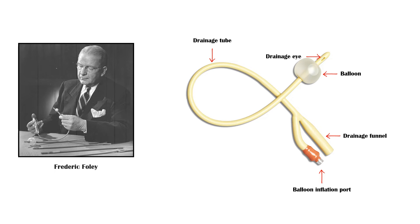The balloon inflation port is used to attach the syringe which contains sterile water. The smooth rounded tip of the catheter extends beyond the balloon, and one or more eye holes are cut in the tube adjacent to the tip to allow urine to drain.